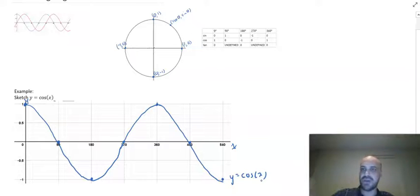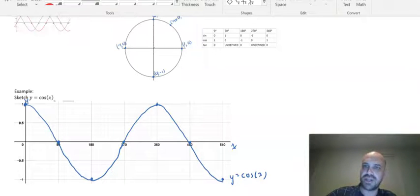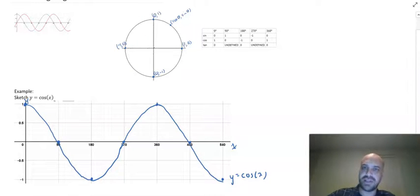Now, of course, we can graph y equals sin x in exactly the same way. When the angle equals 0, the y value equals 0. When the angle equals 90, we're looking at sin here, the y value equals 1. When the angle equals 180, the y value equals 0.